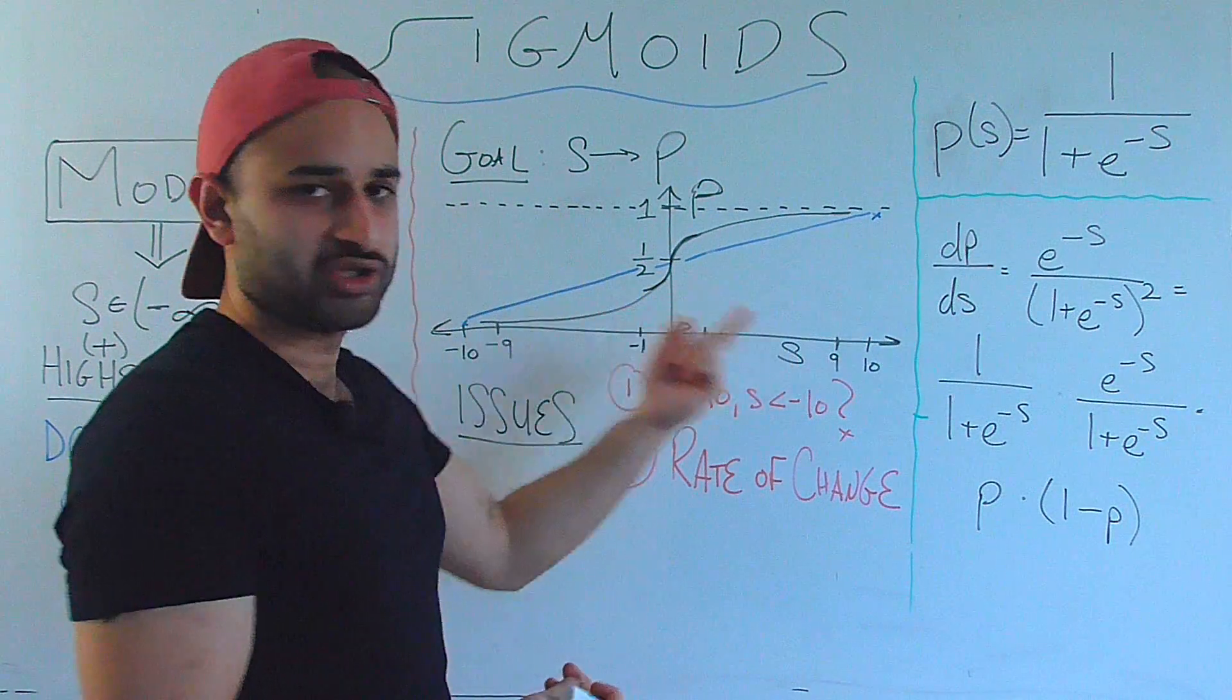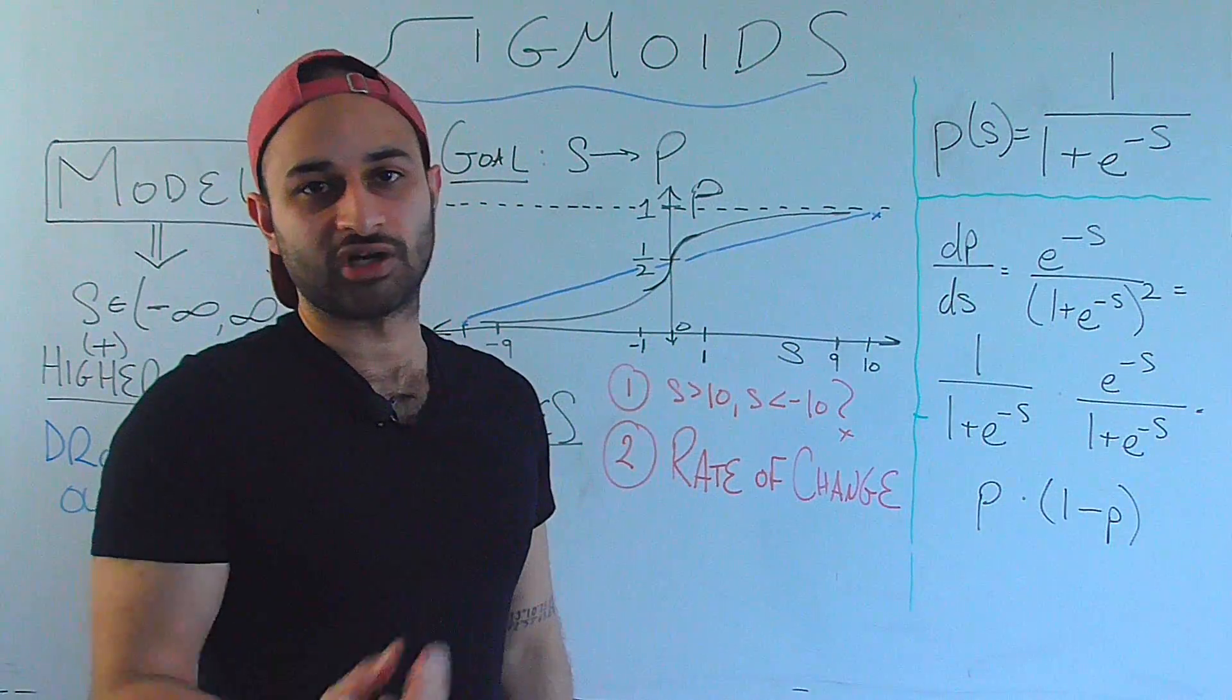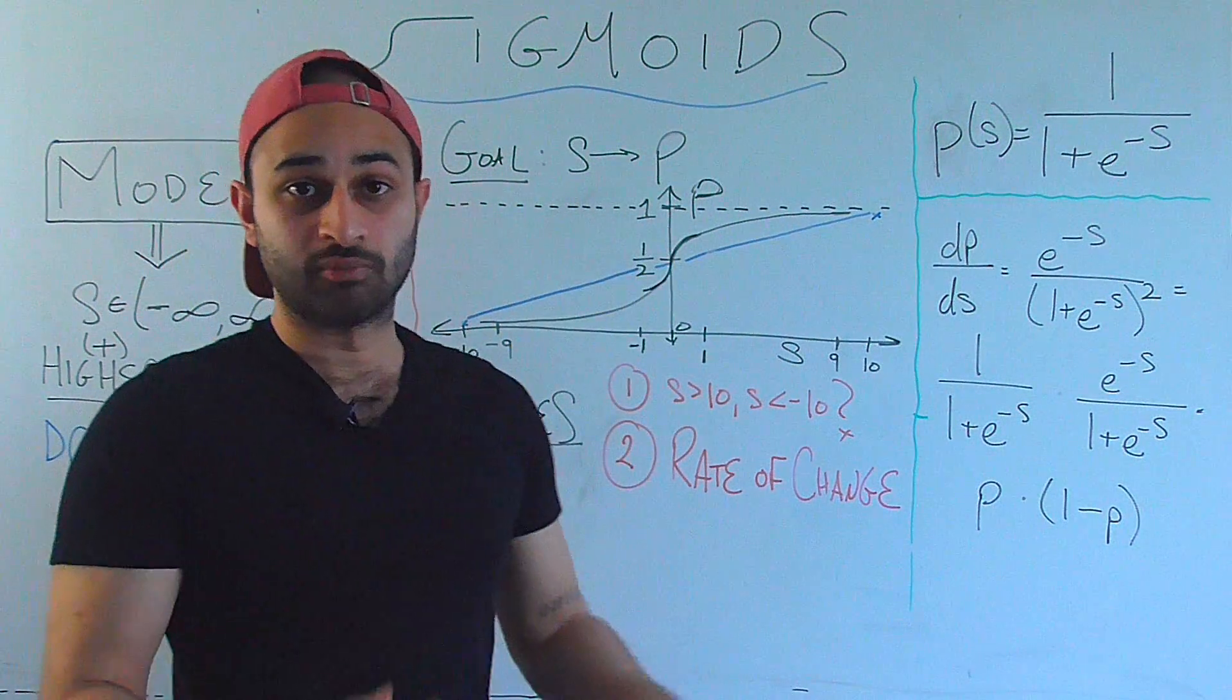But if we already have a lot of information in either direction, the same amount of change in score is really not going to change anything at all. So that's why we use this thing called the sigmoid.